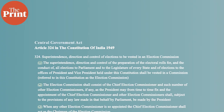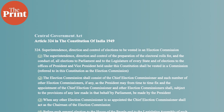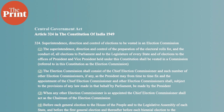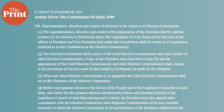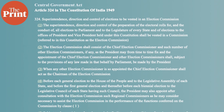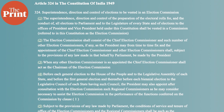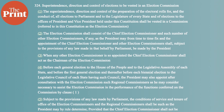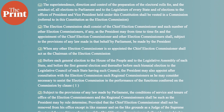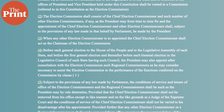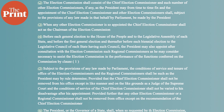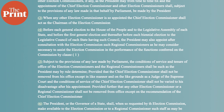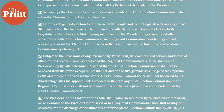The constitution doesn't say much. Article 324 of the constitution talks about the powers of the Election Commission as well as its composition. It says that the Election Commission will have a Chief Election Commissioner and any number of Election Commissioners as the President may decide. This article also says that the President will appoint the Chief Election Commissioner and other members subject to any law made by the Parliament. This phrase — 'subject to any law made by the Parliament' — is extremely important.